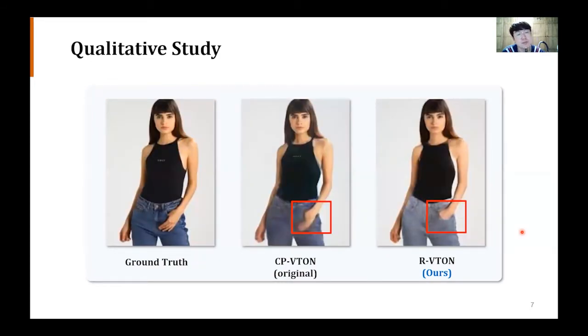This is another sample. Generally, the generative model could not produce very small and sharp objects such as fingers, like the figure in the middle. Interestingly, RVTAN generates a human image who puts her hand in the pocket. Consequently, the image looks more realistic, although it is different from the ground truth image.